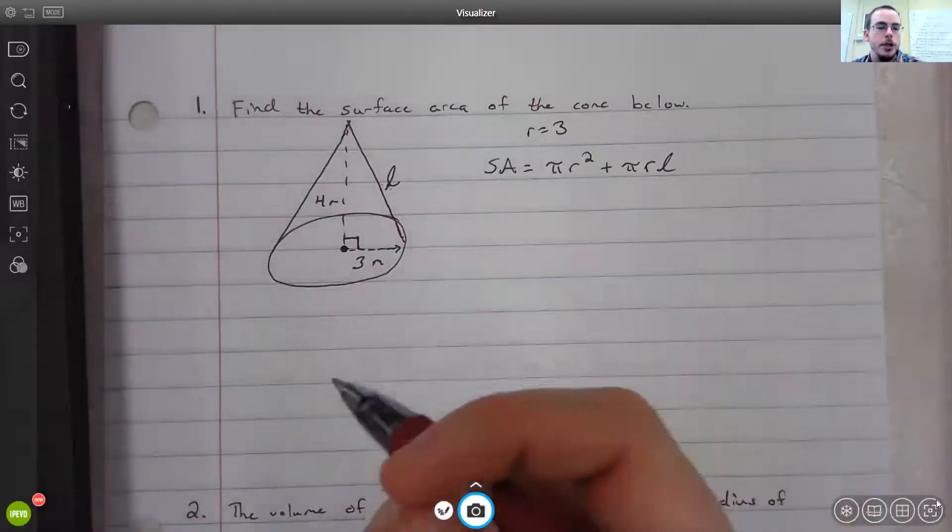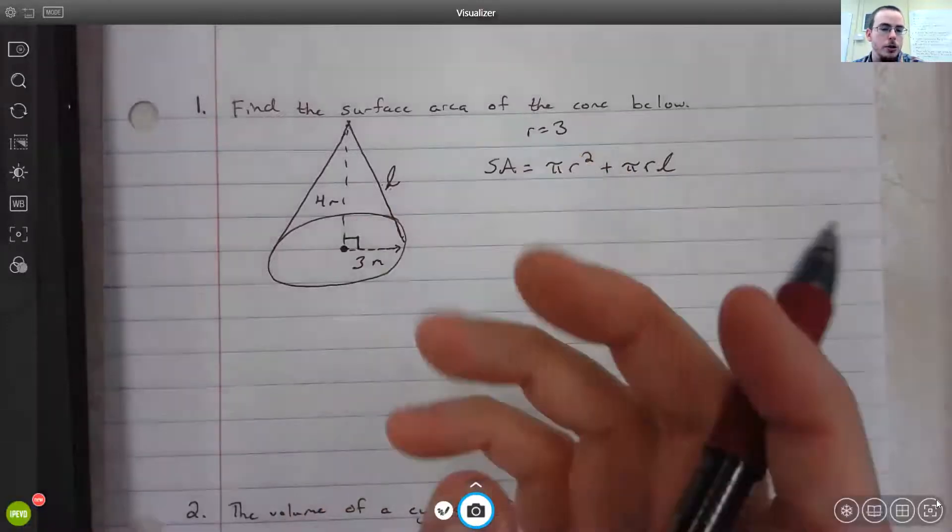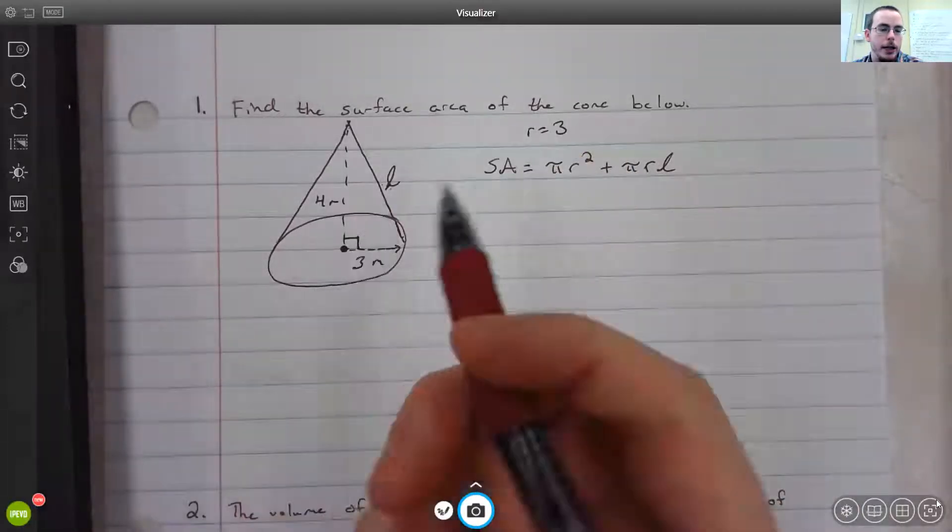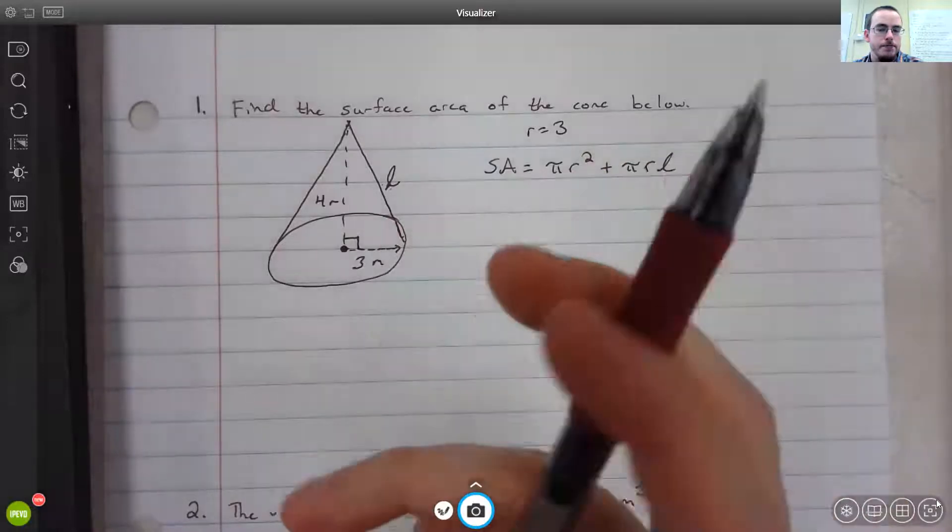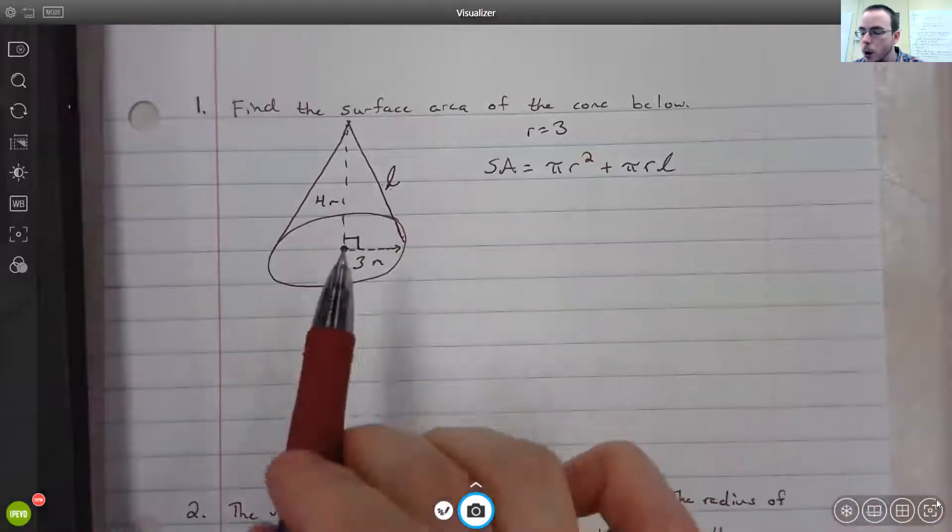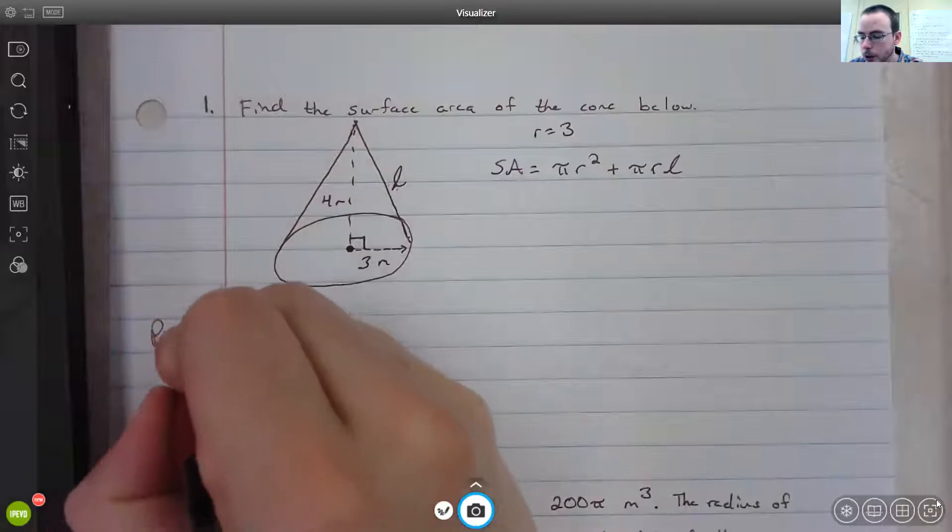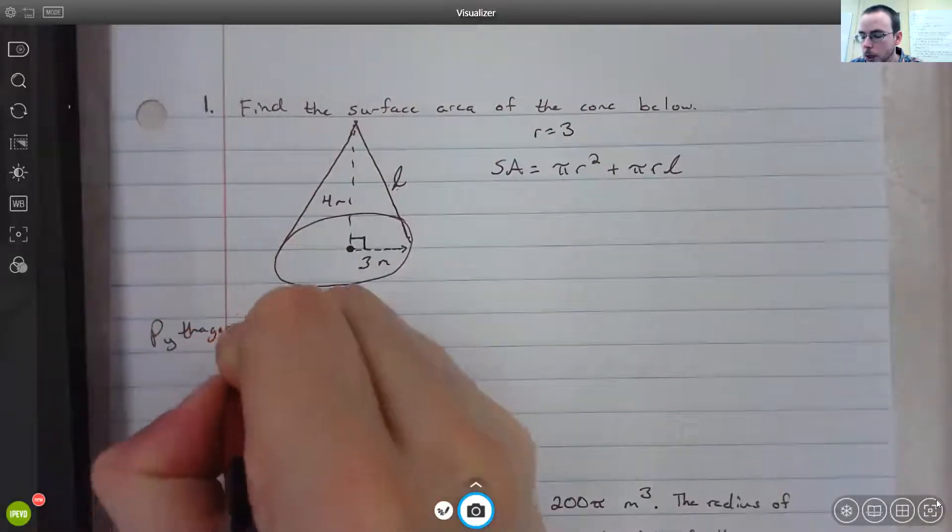If we want to determine the missing side of a right triangle, there are two ways we could do it. We could use trig, but we don't have any angle measures other than the 90-degree angle. Or we could use the Pythagorean theorem, which we talked about a while back.